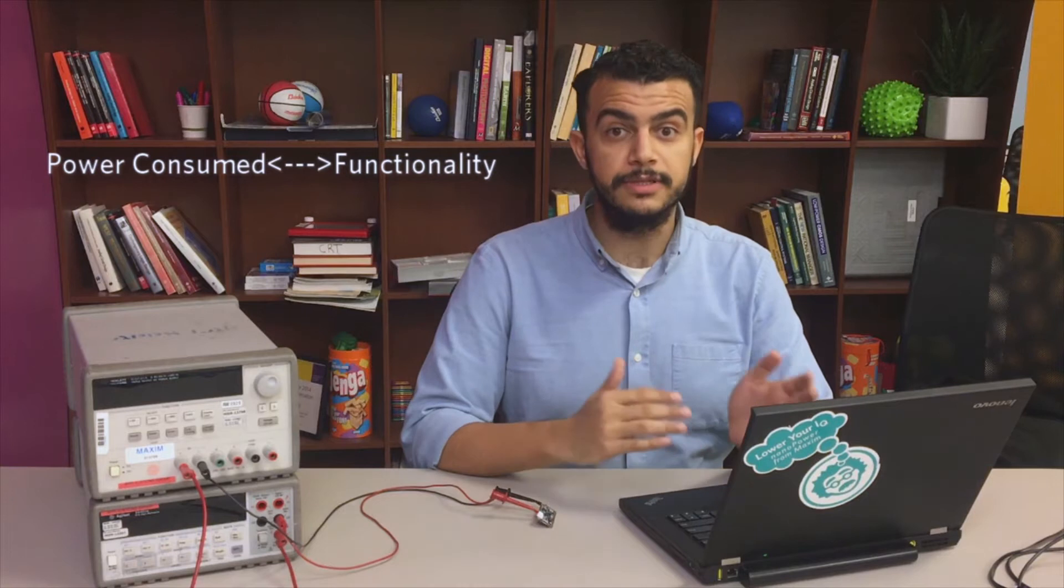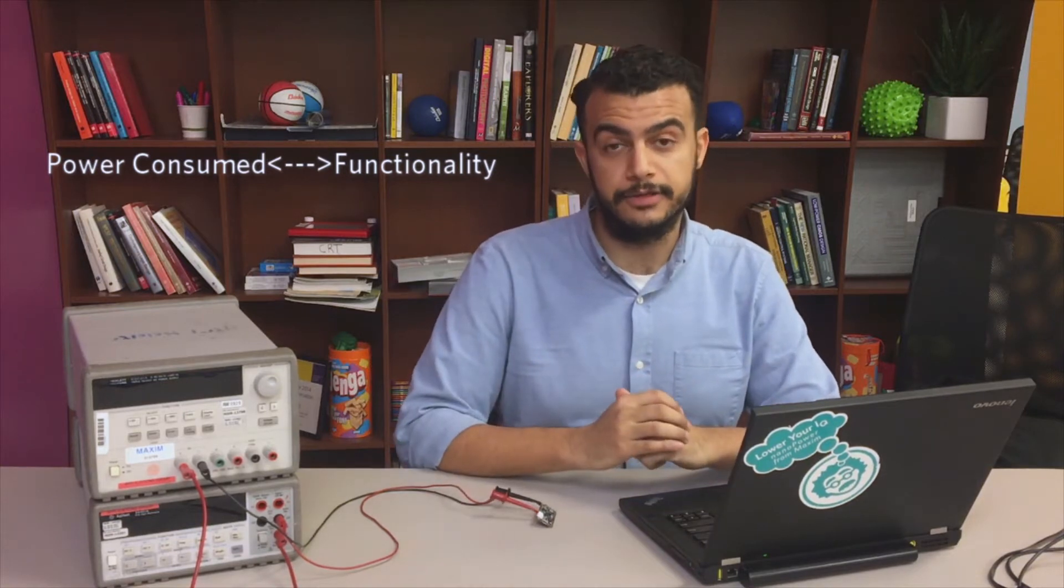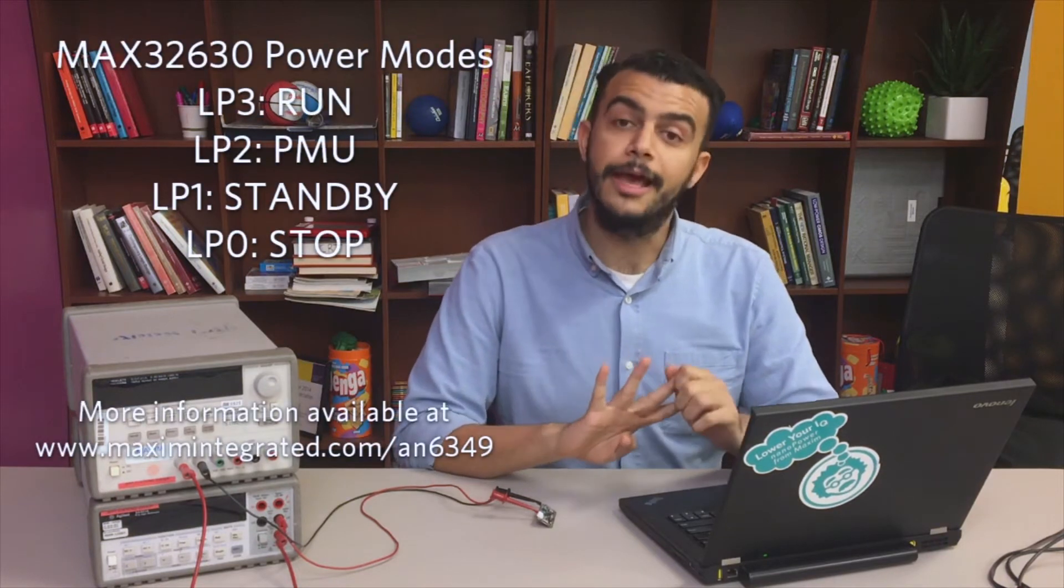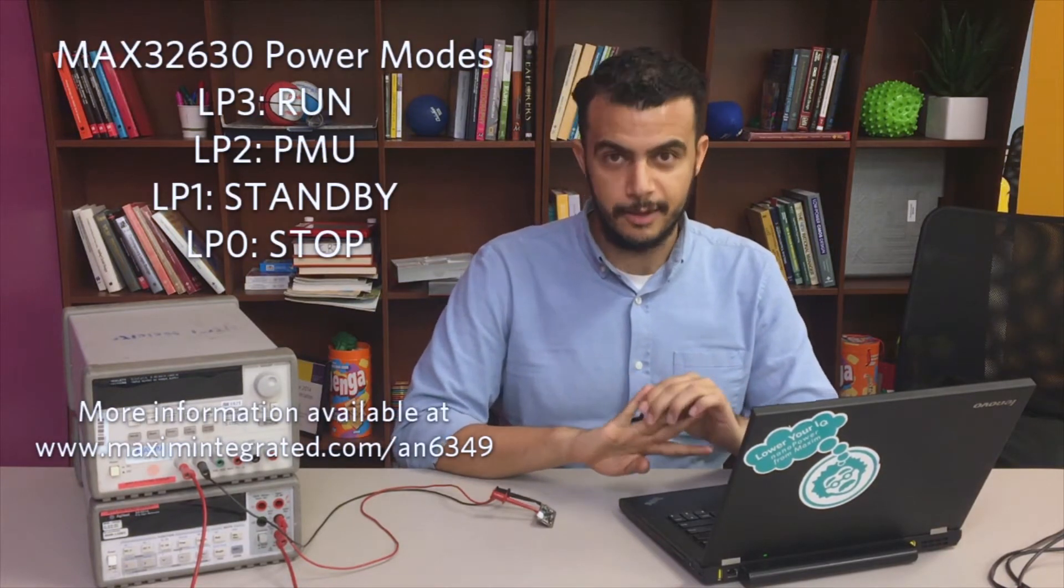Most microcontrollers have different power modes to provide users a trade-off between power consumed and functionality of the microcontroller. The MAX32630 has four power modes: LP3, LP2, LP1, and LP0.